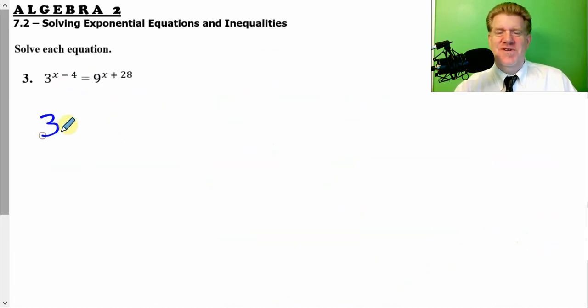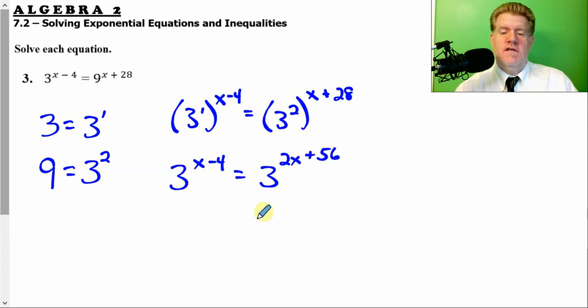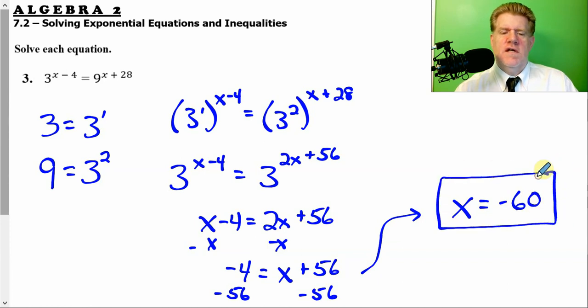What do you think? Hopefully, not too bad. This one's pretty nice. 3 is good. 3 is just 3 to the first power. I know 3 is good because I got a 9. And 9 is what? 3 to the second power. Oh, this one's a piece of cake. Rewrite it. Exponents send them through. Well, it's just a 1, so that stays the same. This is a 2. So, they get doubled. 2x plus 56. Bases, same. Exponents can now equal each other. I guess we'll subtract x. 2x minus x is x. And then subtract 56. So, we get the wonderful and easily negative 4 minus 56 is negative 60.